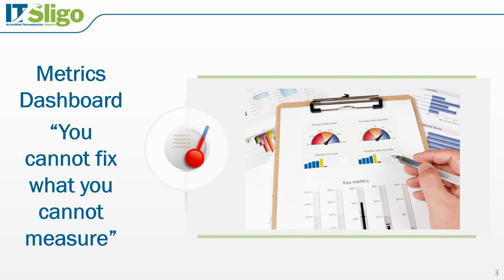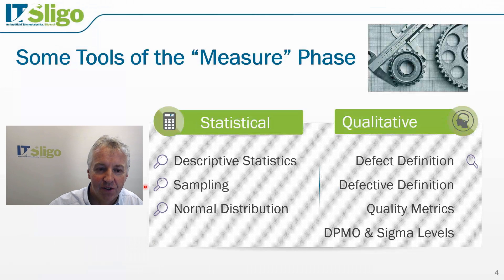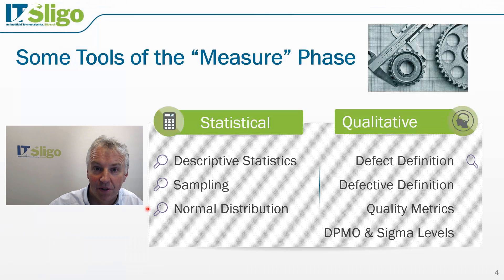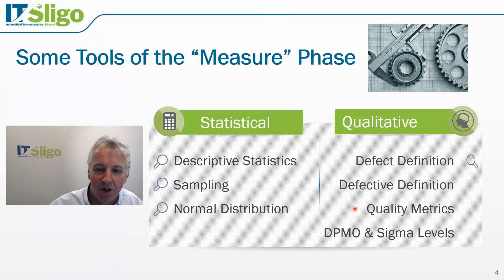Let's look at some tools of the measure phase. This isn't an exclusive list, but we will look at descriptive statistics, talk a little about sampling from the pen manufacturing process, and touch on the normal distribution. In particular, we'll talk about the difference between a defect and a defective. We'll also look at quality metrics such as yield, rolled throughput yield, DPMO, and sigma levels, as well as some lean metrics.